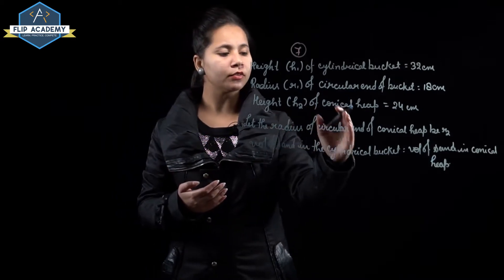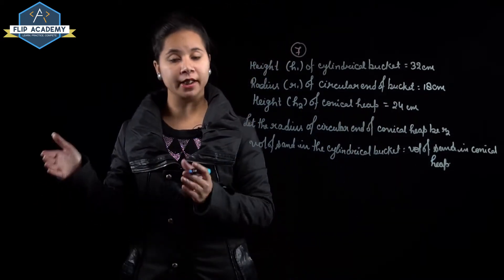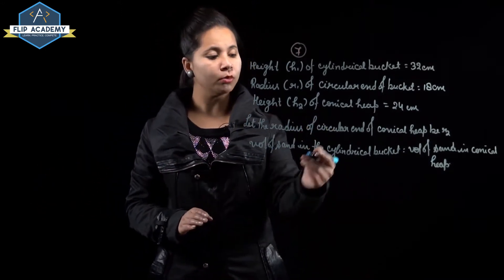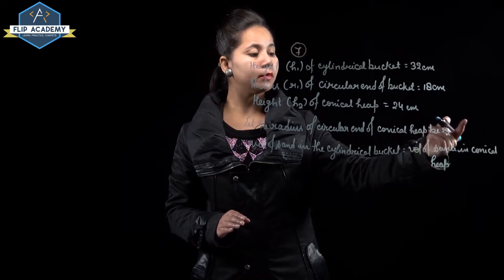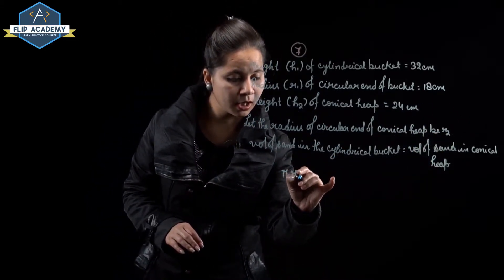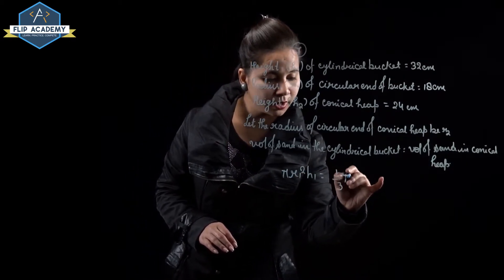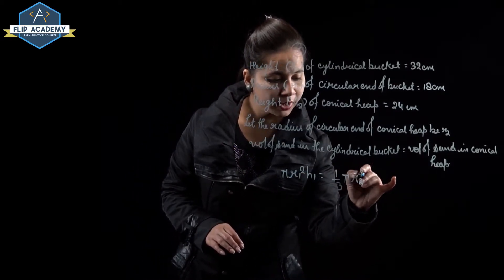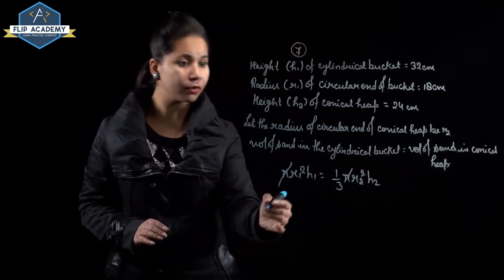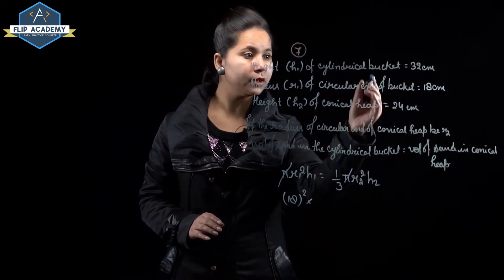Assume the radius of the circular end of the conical heap is r2. Volume of sand in the cylinder equals the volume of sand in the conical heap: π r1² h1 = (1/3) π r2² h2. Pi cancels. Substituting: 18² × 32 = (1/3) × r2² × 24.